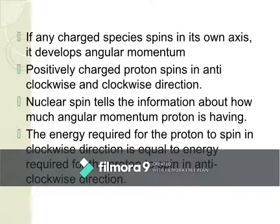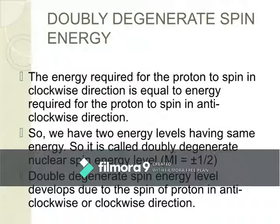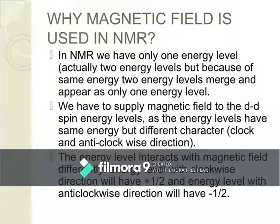That is called MI. What is doubly degenerate spin energy? The energy required for the proton to spin clockwise as well as anticlockwise is almost the same. So we have two energy levels having the same energy, which is called doubly degenerate nuclear spin energy level.